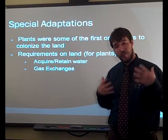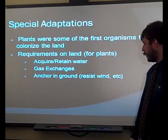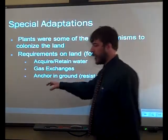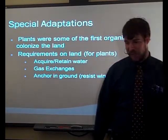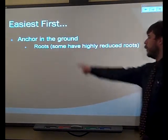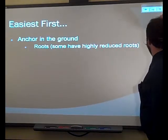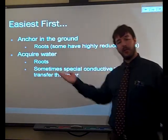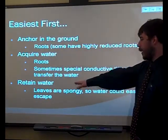Especially water in the form of vapor — we're talking about transpiration. Plants can't be losing that water all the time, and gas exchange plays a big part in that. You can't just float around in the buoyancy-sustaining solution of the ocean. So you need to find some way to anchor into the ground and resist things like the wind. Anchoring — obviously, roots. Some of them have highly reduced roots. We're going to look at some plants that don't even technically have a true root. They all have to have some kind of anchoring thing, some way to acquire water — that's the roots, that special conductive tissue. We'll talk about that when we get to vascular plants — talking about xylem and phloem.